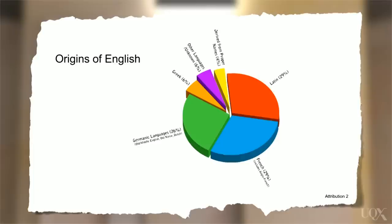The remaining 16% is sourced from Greek and other languages, and also from the names of people and places. Remember, pie charts give information about how a whole idea is divided into parts that make up 100%. It's different with other visuals.